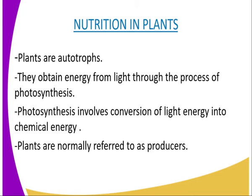Photosynthesis is a process by which plants manufacture food substances from carbon dioxide and water using energy from sunlight. It involves the conversion of light energy into chemical energy, which is stored in food. As a result of photosynthesis, plants manufacture food available to other organisms, which is why plants are referred to as producers.